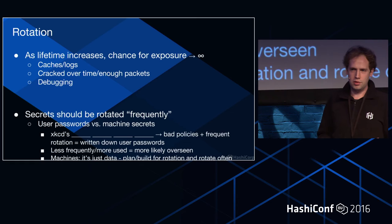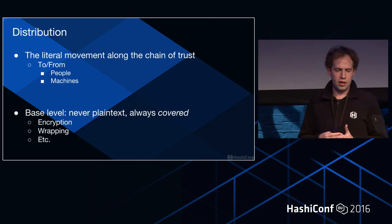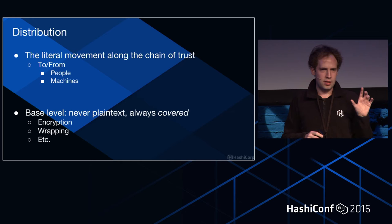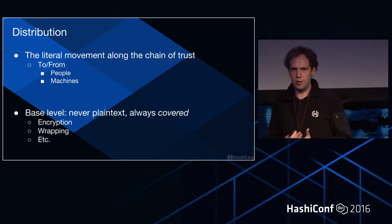Distribution is the literal movement along the chain of trust — to or from people or machines. That could be a person typing in a password that gets to a secret management tool and gets a token back, or one machine starting up a Docker container as an agent and wanting to introduce that Docker container. At the base level, it should never be plain text. It should always be covered — that could be encryption or wrapping.